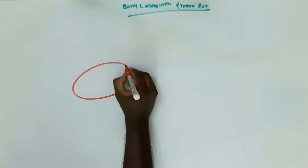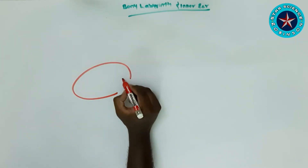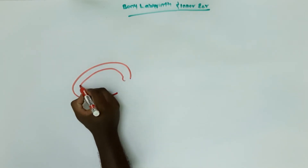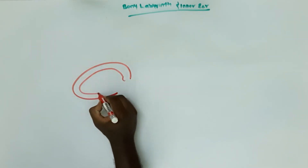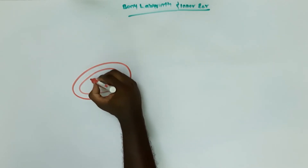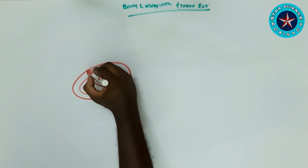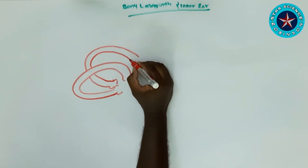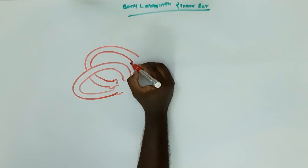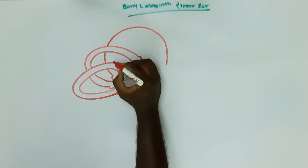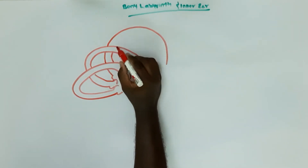Between the bony and membranous labyrinth, perilymph is present, whereas within the membranous labyrinth, endolymph is present. Both the bony and membranous labyrinth consist of three parts: the bony labyrinth consists of the vestibule, cochlea, and semicircular canals.